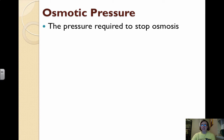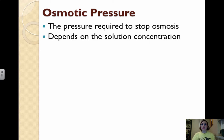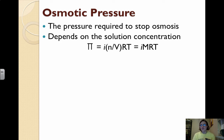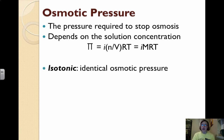Osmotic pressure is the colligative property that deals with osmosis — it's simply the pressure required to stop osmosis, and it depends on the solution concentration. Osmotic pressure is represented by capital pi: π = iMRT. This looks very similar to the ideal gas law (PV = nRT), except we have the Van't Hoff factor i and use molarity M. R is the ideal gas law constant in liters and atmospheres, and T is temperature in Kelvin. Make sure your units cancel out.